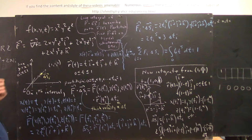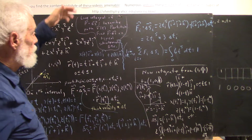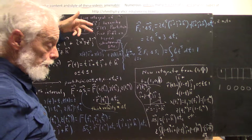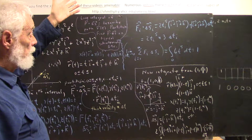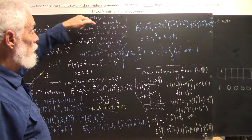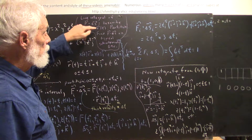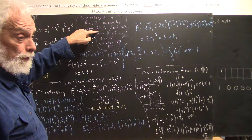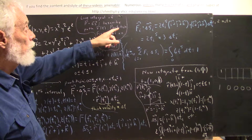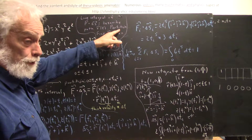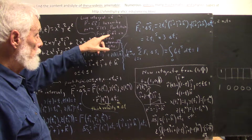We're asked to find the line integral with a gradient of a given function over a given path. When we find a line integral — in order to find a line integral of F dot ΔS — we follow a specific procedure.